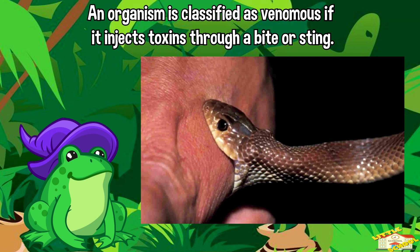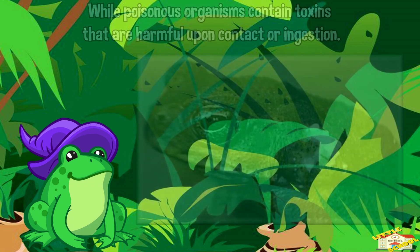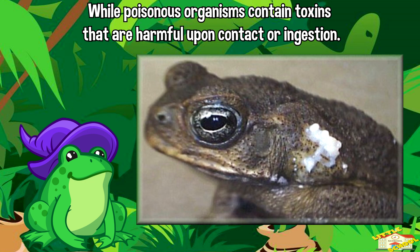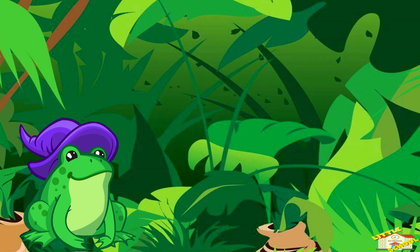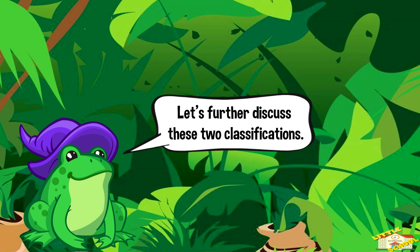An organism is classified as venomous if it injects toxins through a bite or sting, while poisonous organisms contain toxins that are harmful upon contact or ingestion. Let's further discuss these two classifications.